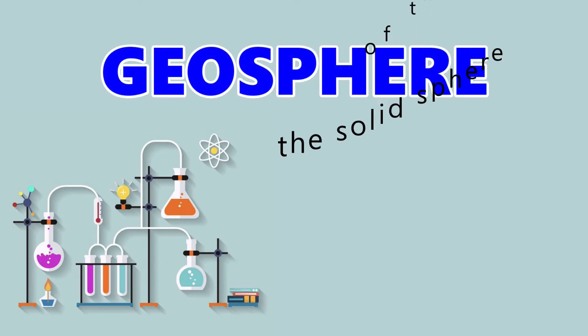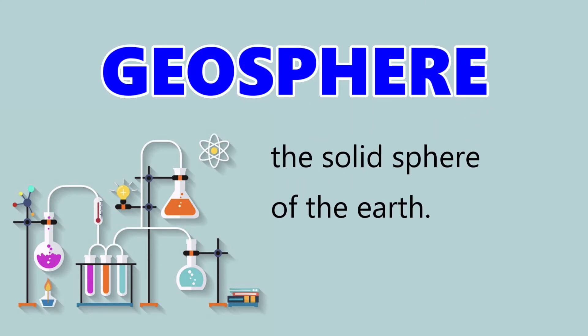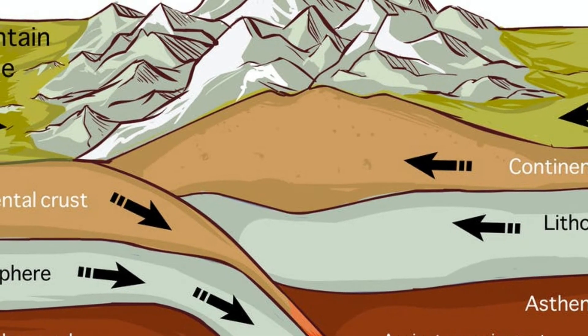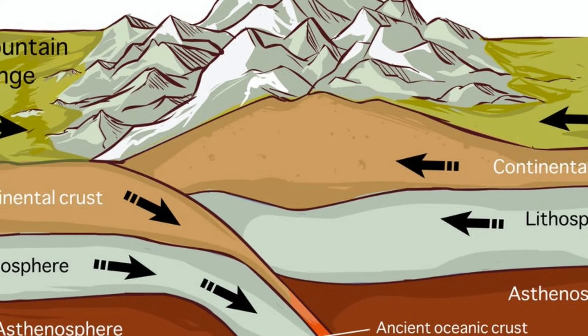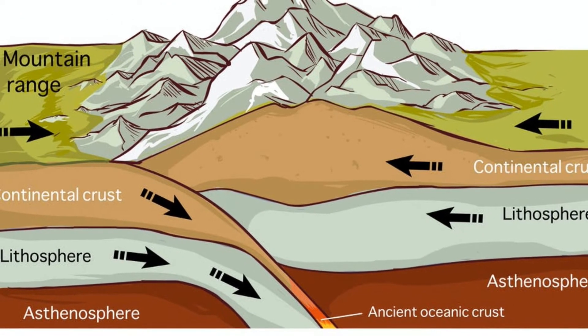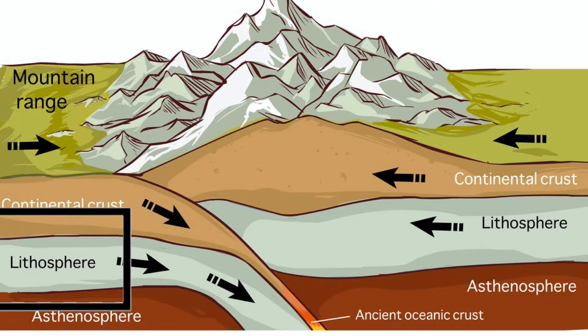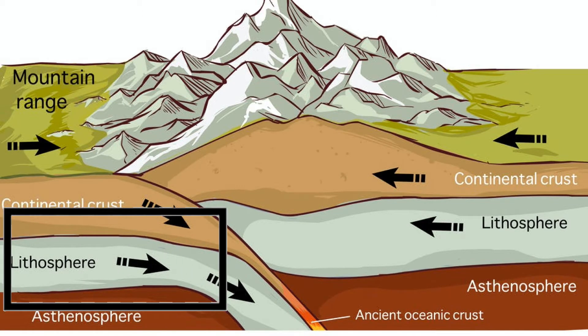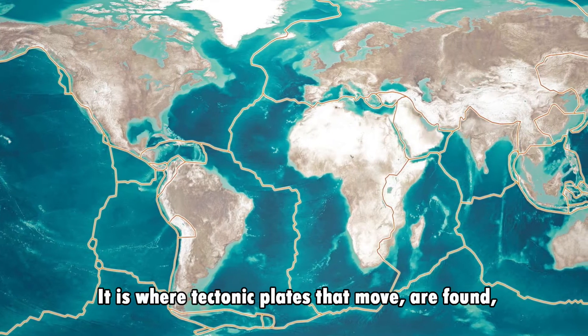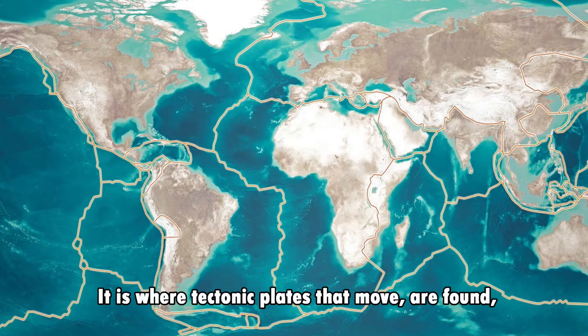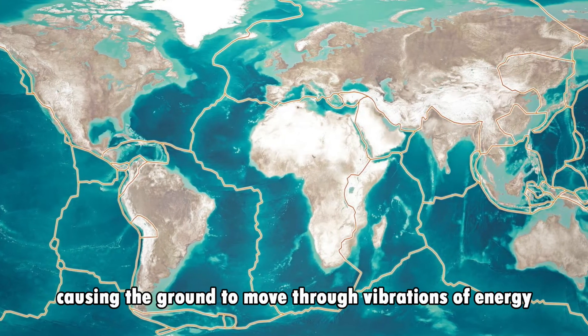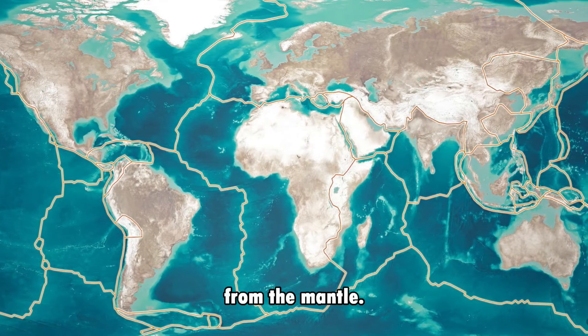The geosphere is the solid sphere of the earth. This is where different geologic processes such as volcanic activity, formation of mountains, volcanoes, and other geologic structures take place. The lithosphere is a part of the geosphere composed of the solid outermost part of the planet. It is where tectonic plates that move are found, causing the ground to move through vibrations of energy from the mantle.